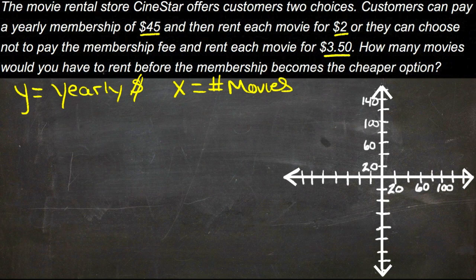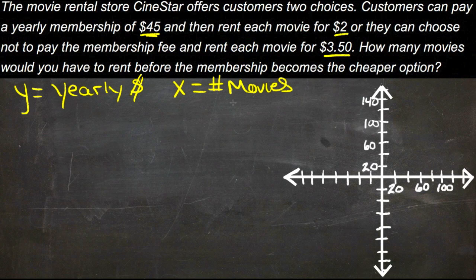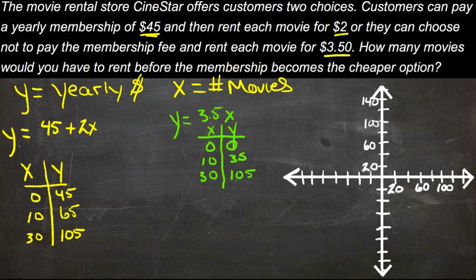The question is: how many movies do you have to rent in a year before the $45 membership fee becomes the better option? I've assigned y to the total yearly cost and x to the number of movies. Since this word problem ran a little long, I've pre-built some of our information here.